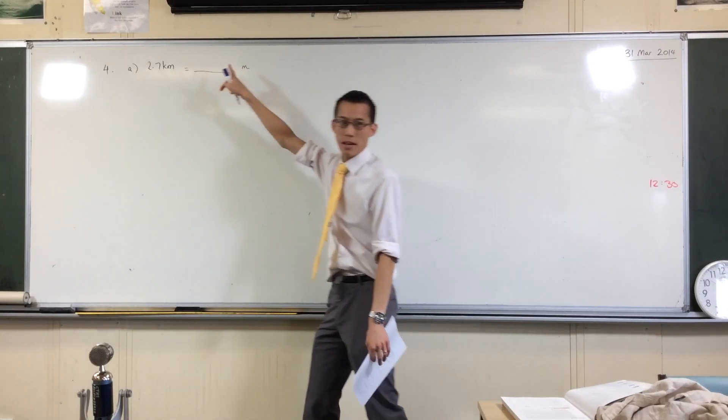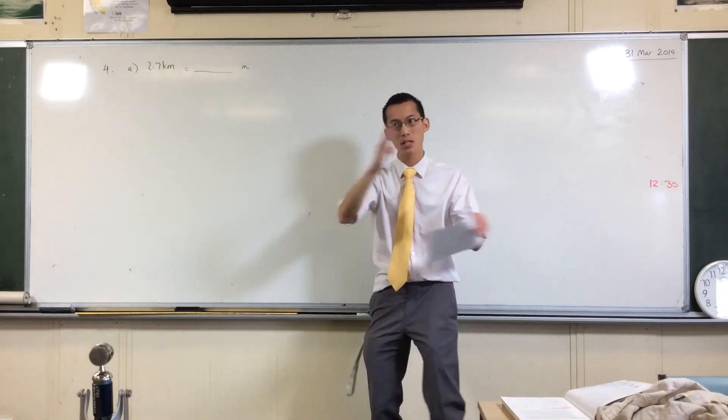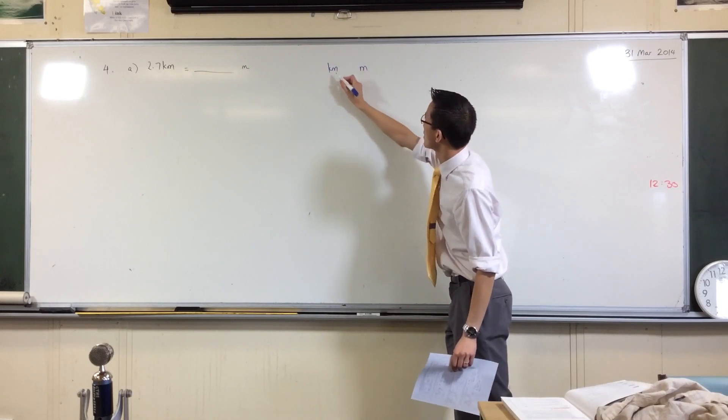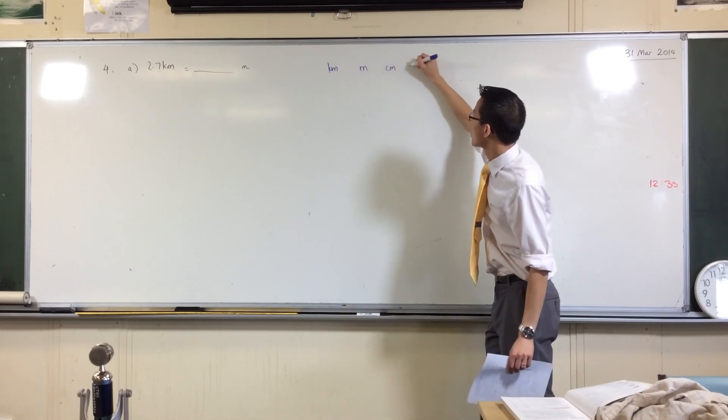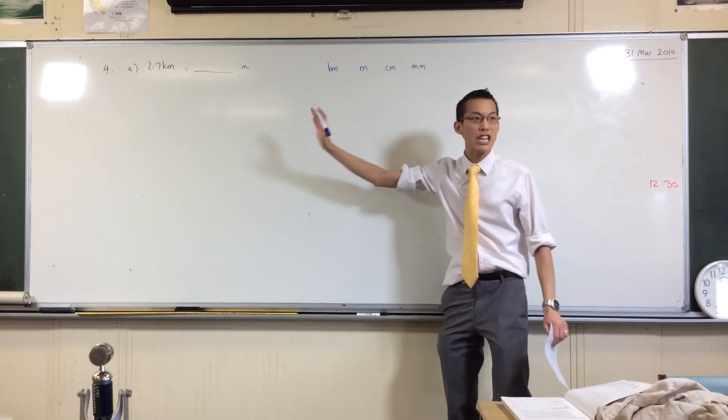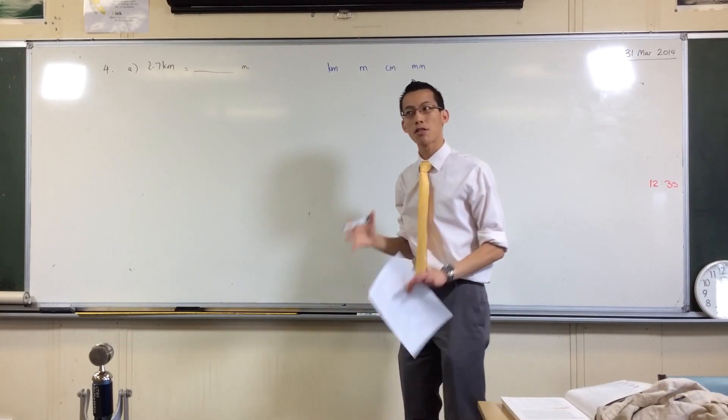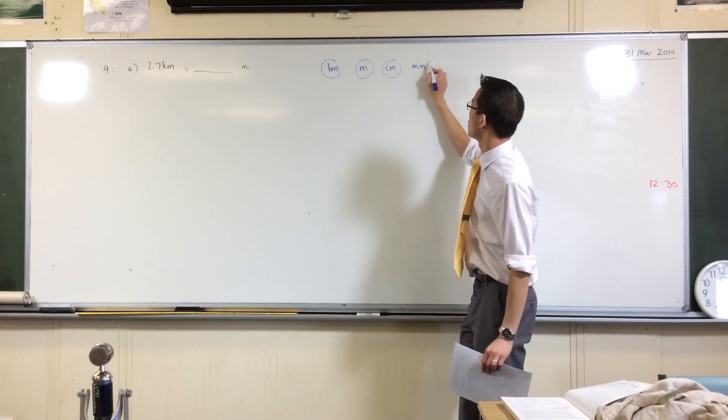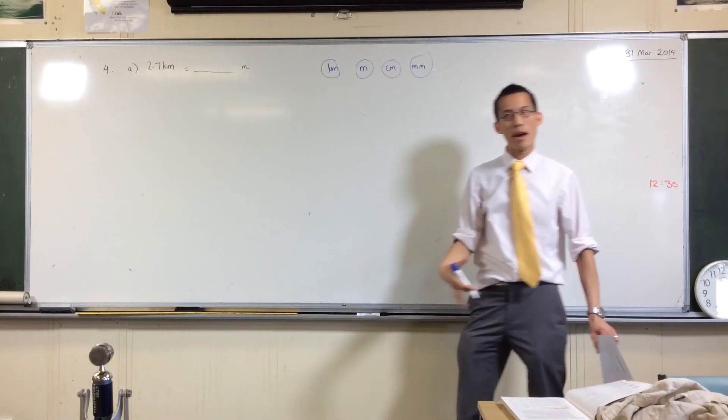It's the metric one. So there are four units on it. From biggest to smallest, it goes kilometers, meters, that's an M, centimeters, and millimeters. Now, you draw the whole thing. Drawing the whole thing is actually much easier than just drawing parts of it because there's a pattern to it.